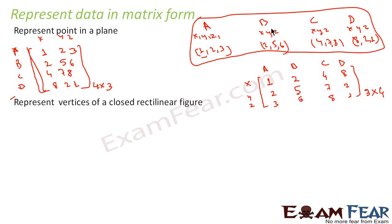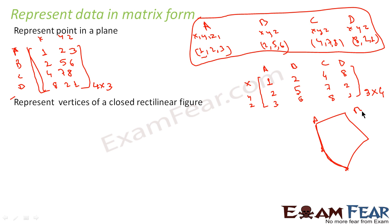One very critical application of matrices is in the computer world, where you give data to a computer to perform operations. Let's take one more example: we can represent the vertices of a closed rectilinear figure. Suppose we have a figure with four sides, and the vertices are A, B, C, and D. Let's take values: A is (2, 0), B is (3, 5), C is (6, 1), and D is (8, 3).